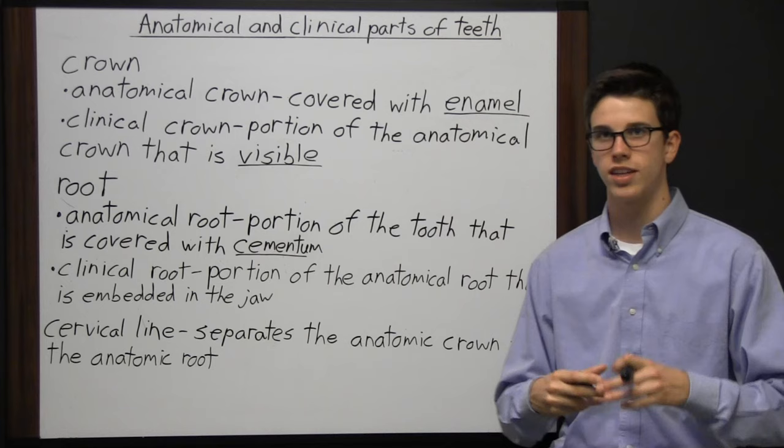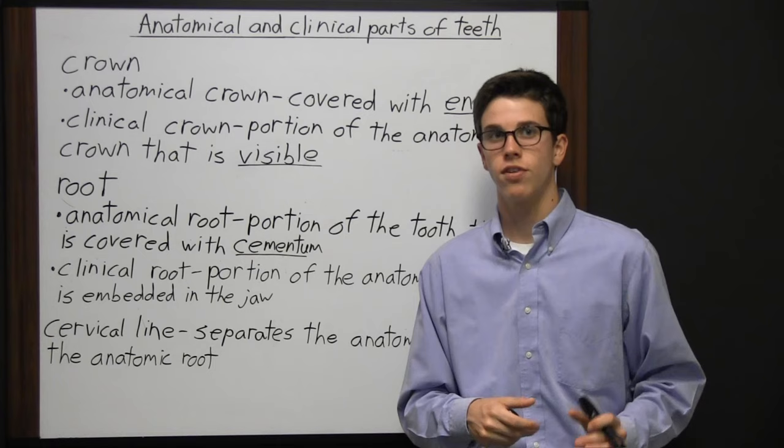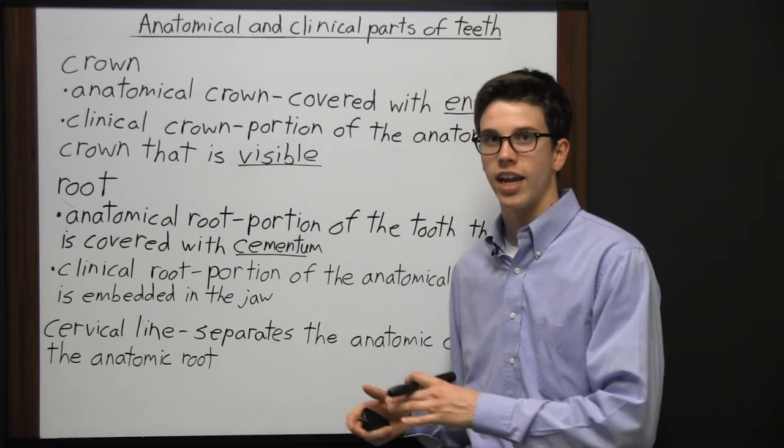The cervical line separates the anatomic crown from the anatomic root. It doesn't relate to the clinical crown or root because those can change, whereas the cervical line is always the same. The cervical line is the junction between enamel and cementum.